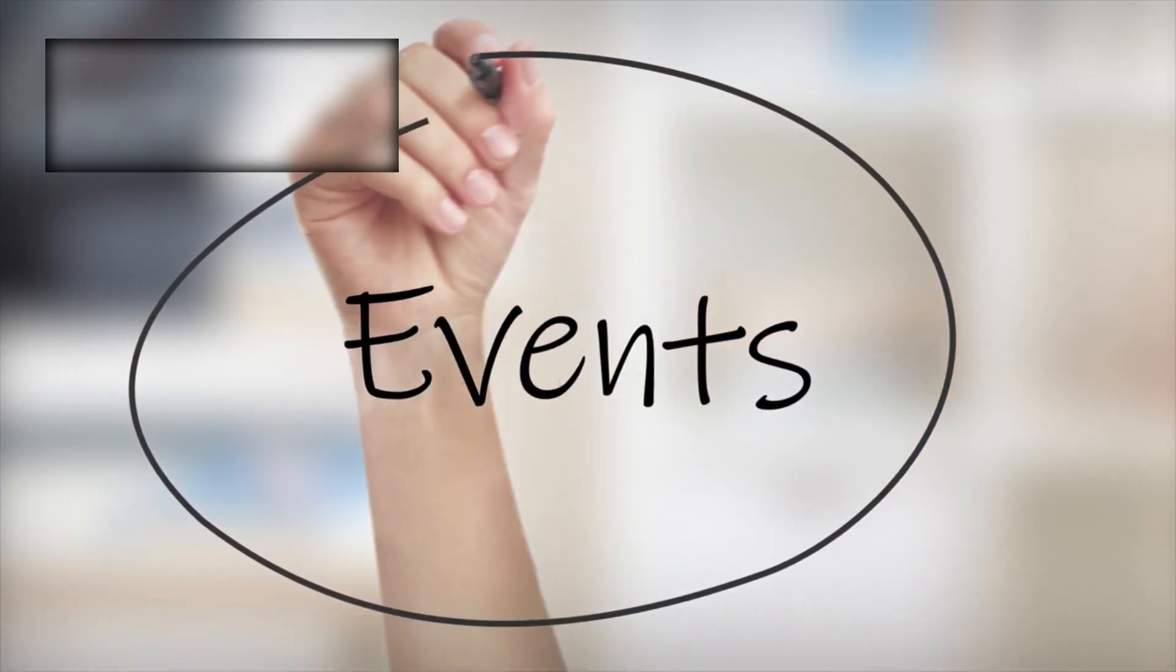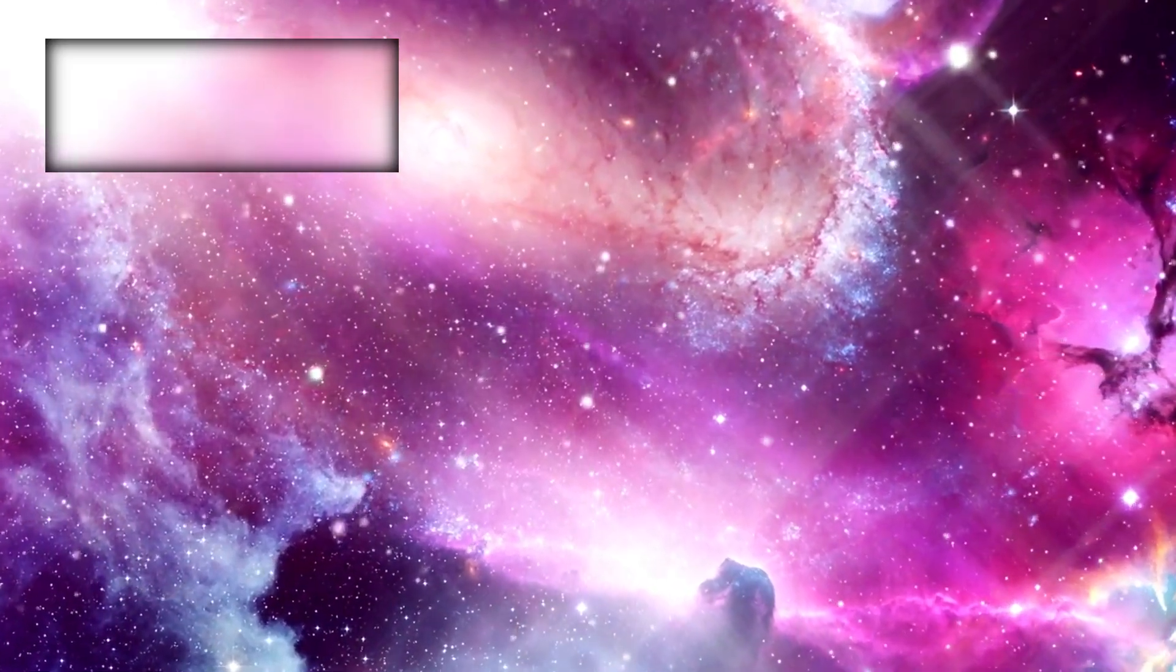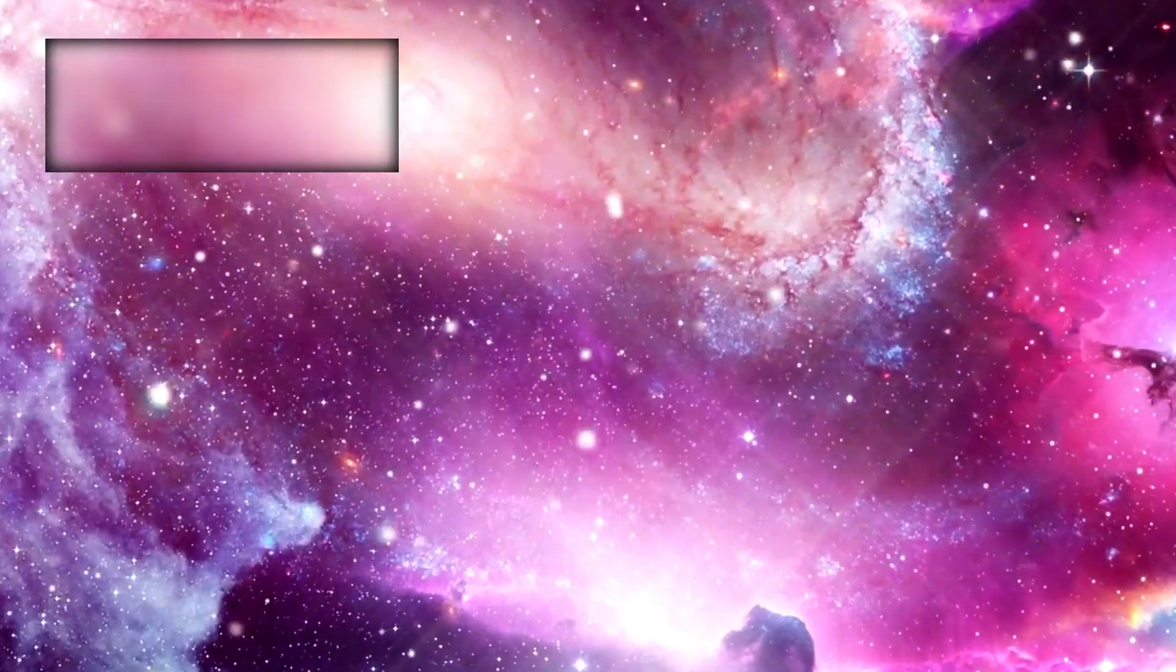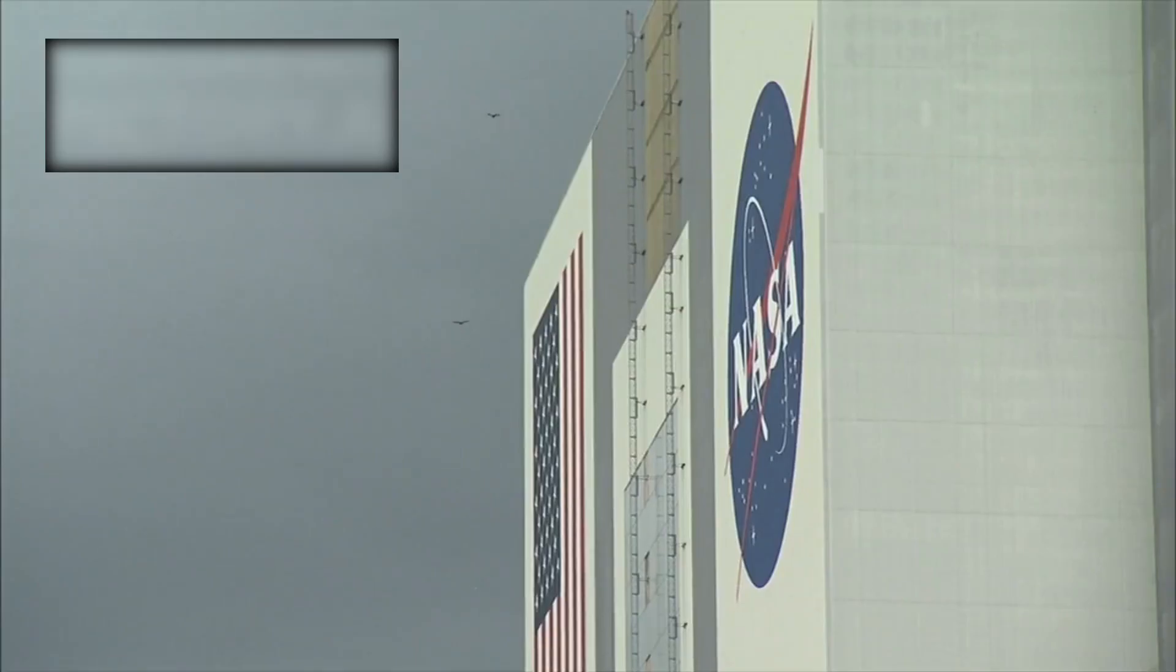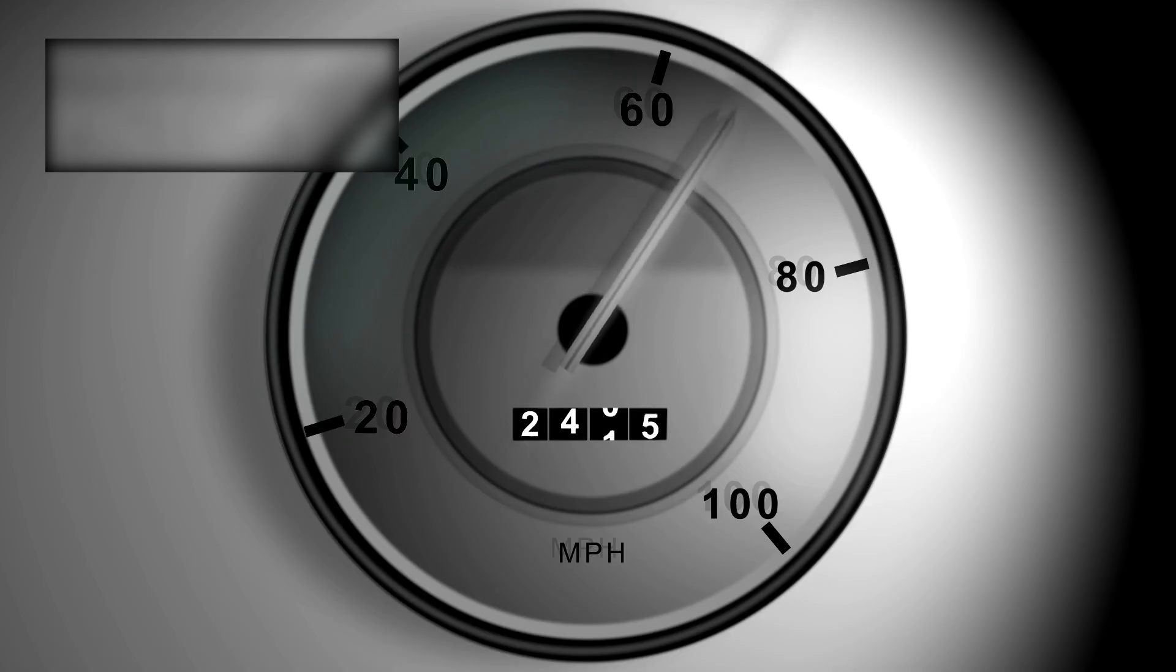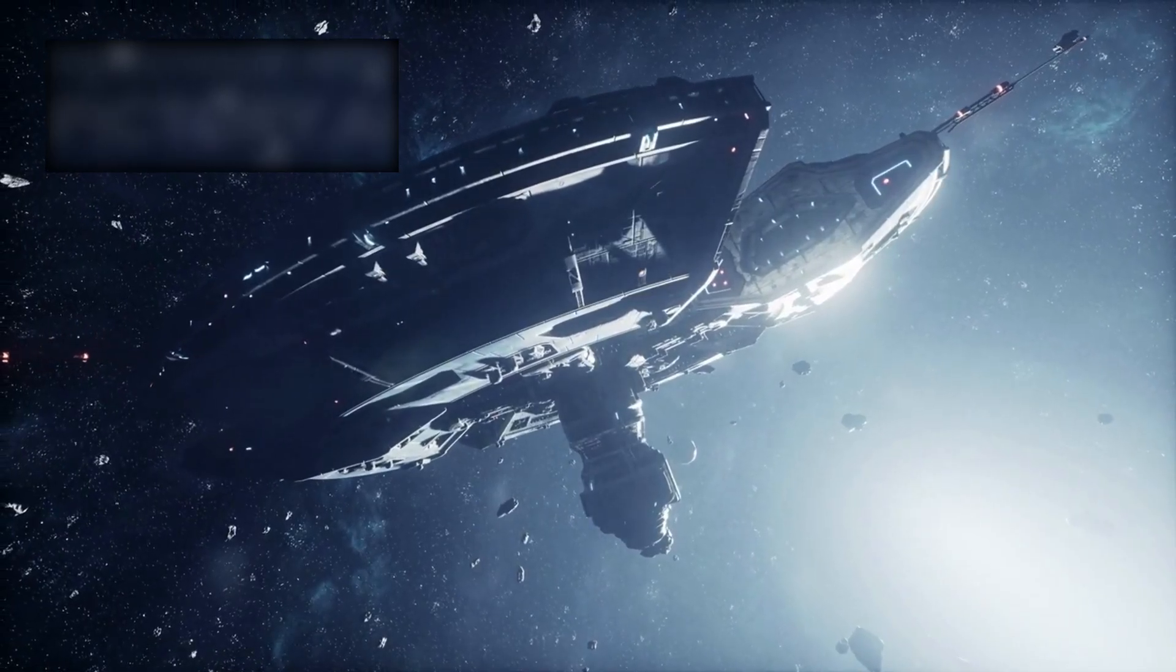From the moment of its discovery, Oumuamua captured the imagination of scientists and dreamers alike. Its path was hyperbolic, a mathematical signature that told us one clear truth: it came from somewhere else, and it would never return. It entered our solar system at nearly 315,000 kilometers per hour, swinging around the sun and disappearing back into the void, as if it had merely stopped by to be noticed.